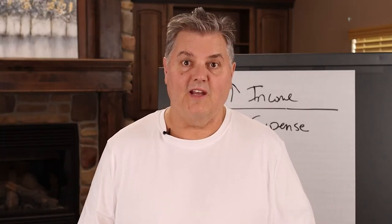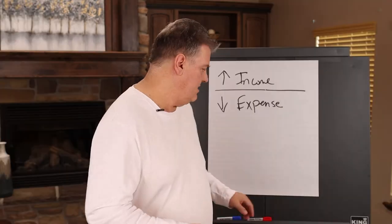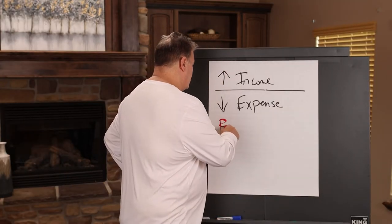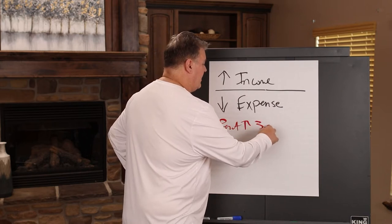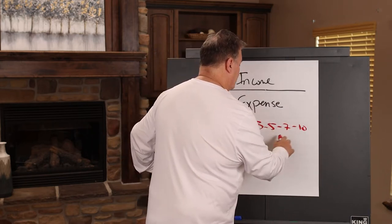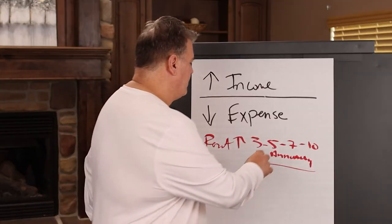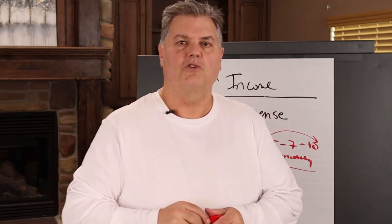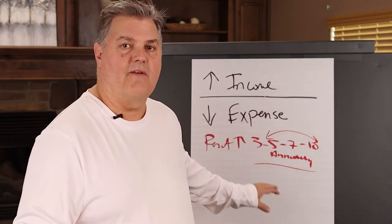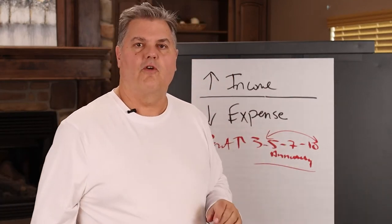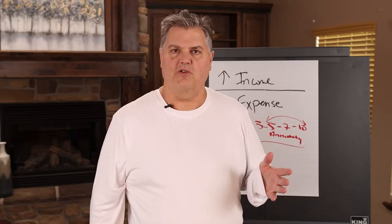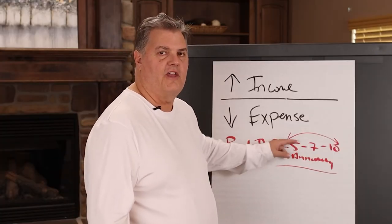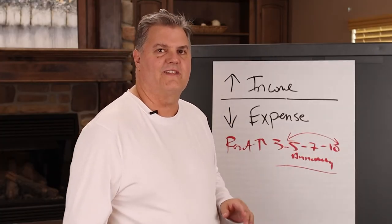We try to keep rent increases under 10% — between three, five, seven, and ten percent annually. This is probably the range for most people. Now in some states that have rent control, you'll have to go by whatever the local ordinances are. In California, they have statewide rent control. In Oregon, the same. So you have to follow the law and make sure you increase rents according to what is allowed.